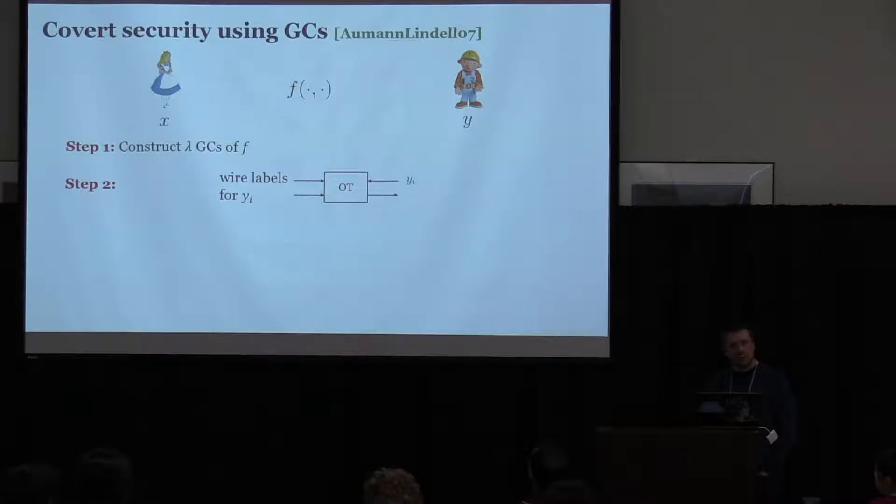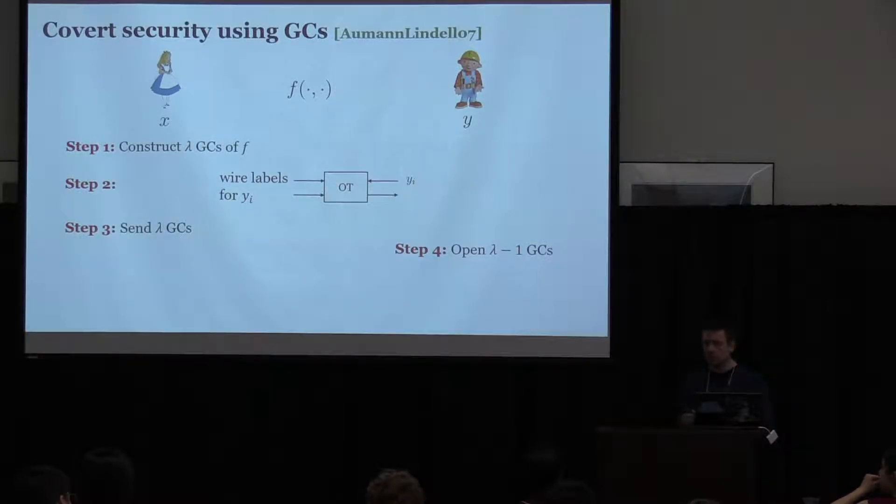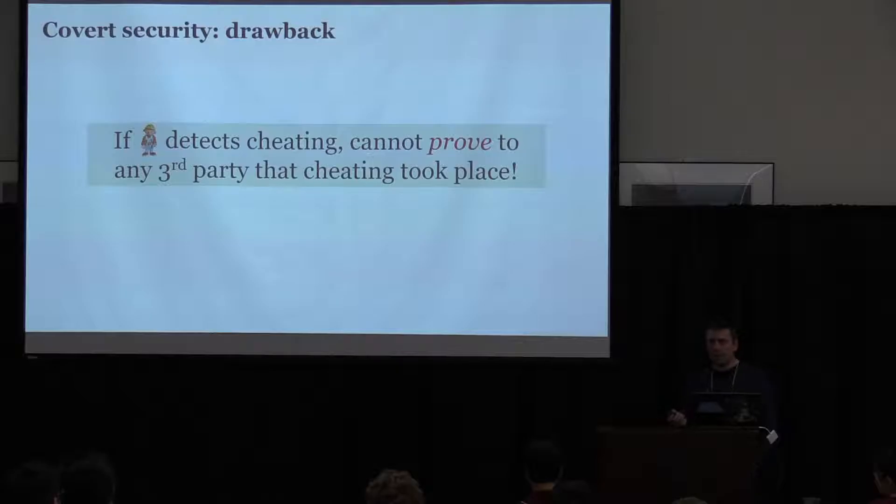So now instead of asking Alice to generate one circuit, Bob asks Alice to generate lambda circuits where lambda is a parameter, you can think of a small number, perhaps two or 10, right? And basically repeat everything that Alice does lambda times and send lambda garbled circuits. Then Bob will choose a random, a small number between one and lambda and the number that he chose will be the circuit that he will evaluate. And he will ask Alice to open all of the other circuits. And if Alice is not able to open them correctly, that means she's cheating. And Bob will have caught Alice. Okay, and if she opens fine, then that means that with some high probability, she was acting correctly.